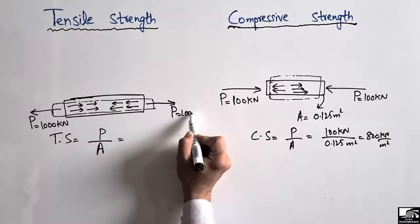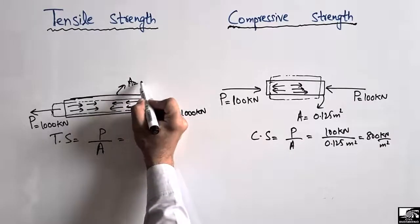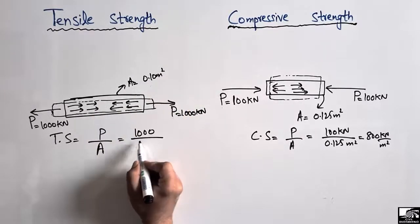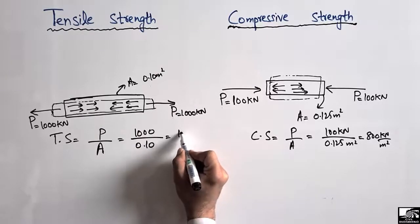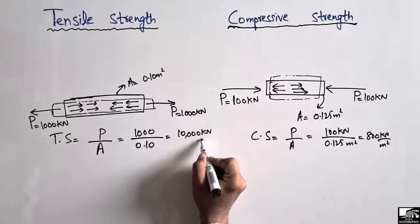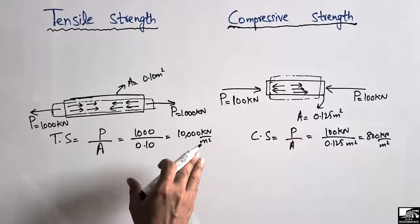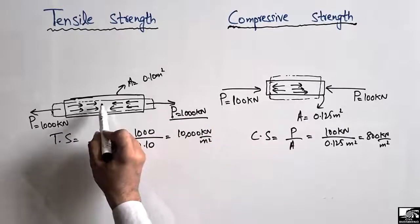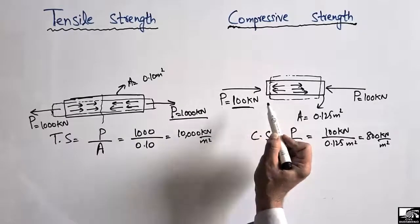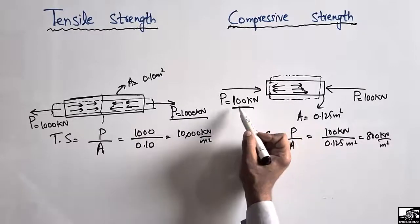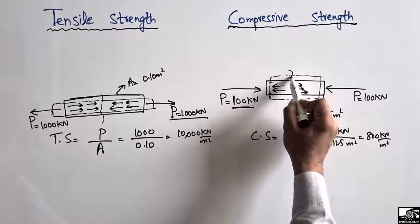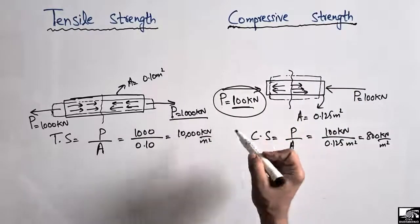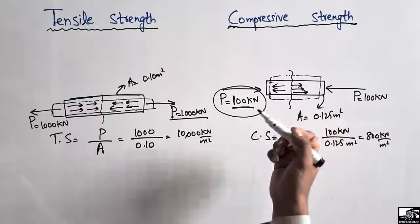The original area of the material is 0.10 square meters. So the tensile strength equals 1000 kN divided by 0.10, which gives 10,000 kN per square meter. This is the tensile strength of the material — up to this strength the material can take the load; beyond this load the material will break into two portions. This is the maximum load the material can take, which is why we call it strength — it is the maximum capability of a material to resist an applied load.